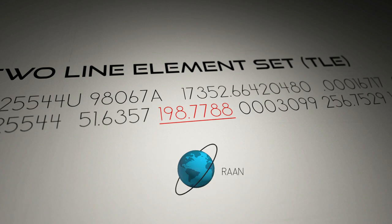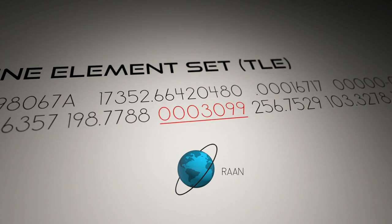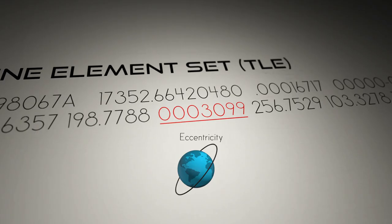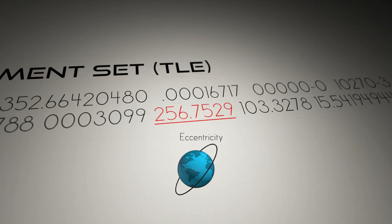Then, moving to the right, we come to eccentricity. Because TLEs are for Earth-orbiting objects, the eccentricity must be less than 1, and therefore the decimal in front is assumed. This object's eccentricity is .0003 — not a perfect circle, but pretty darn close. After eccentricity, we have argument of perigee, and it's 256.7 degrees.